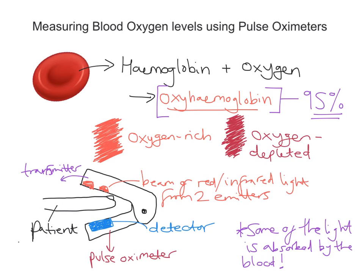We can tell the oxygen level because attached to the detector you'd have wires running to some kind of display. You read the value there and you're looking for that 95% figure. That is how you measure blood oxygen levels using a pulse oximeter — you look for the amount of light that gets absorbed by oxygen-rich hemoglobin.